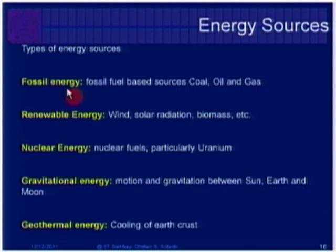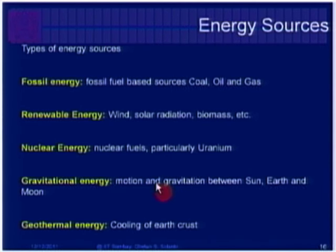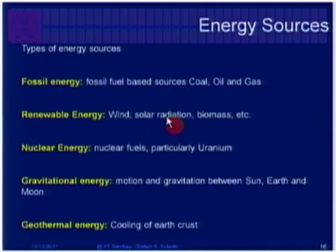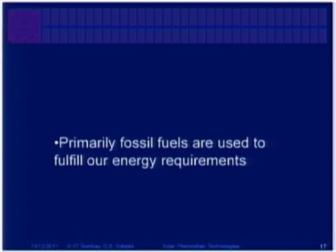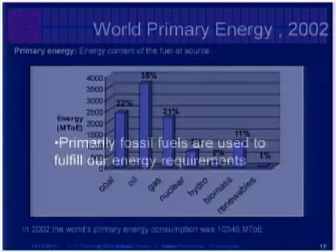What are the various energy sources? Fossil energy comes from coal, oil, and gas. Renewable energy comes from wind, solar radiation, and biomass. There is also nuclear energy, gravitational energy from the interaction between sun and earth, and geothermal energy. These are the various resource categories that can supply our energy demand. Right now, all over the world, the dominant supply comes from fossil energy. Let us look at what is our primary fossil fuel-based energy and how it fulfills requirements.